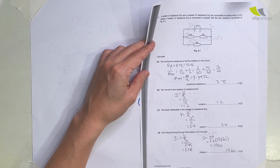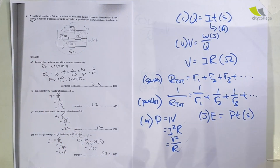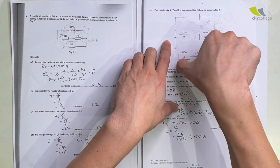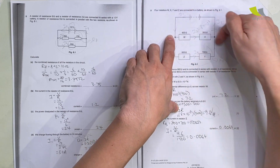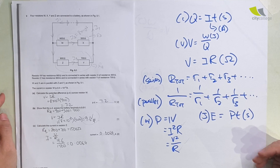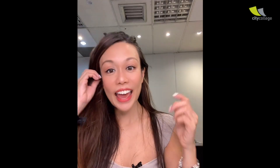I hope this helps. As you can see, it's not overly difficult — a lot of concepts keep repeating. They want you to recognize that PD across parallel branches is the same, and current flowing through series components is the same. Remember all these formulas and you'll be well prepared. Make sure to like and subscribe — more videos like this are coming up.